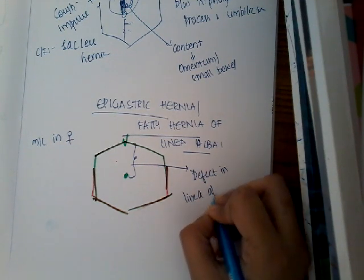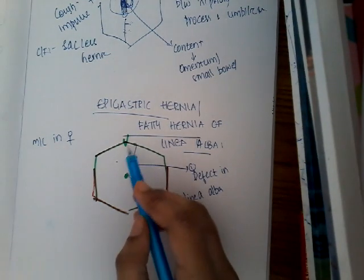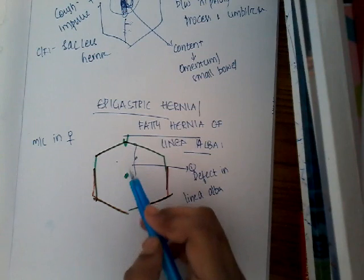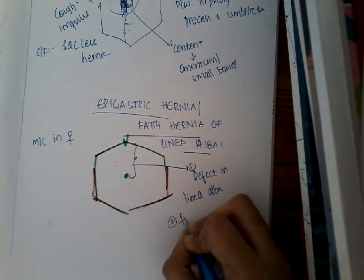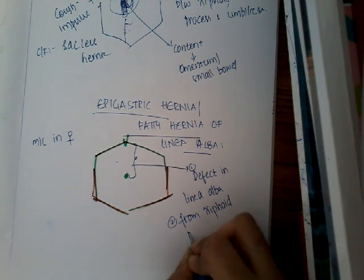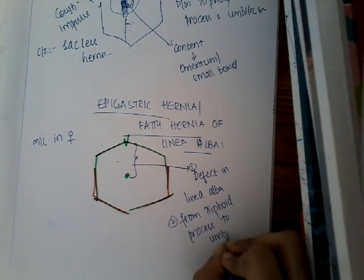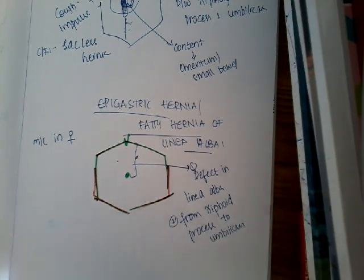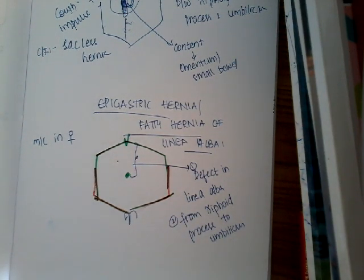That defect should be from the xiphoid process to the umbilicus, and not from the umbilicus to the pubic symphysis. So epigastric hernia, or fatty hernia of linea alba, always involves the region from the xiphoid process to the umbilicus.